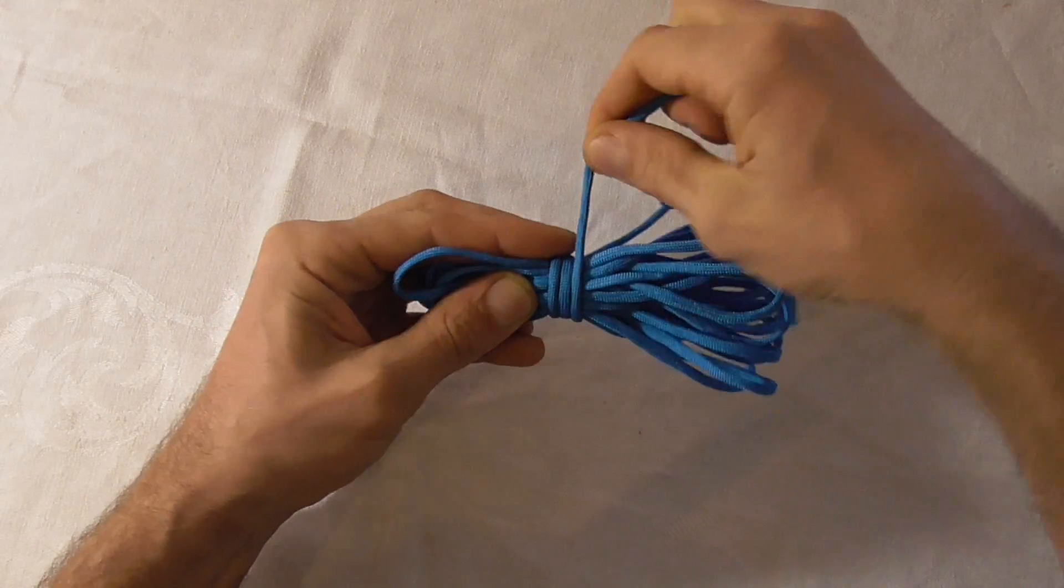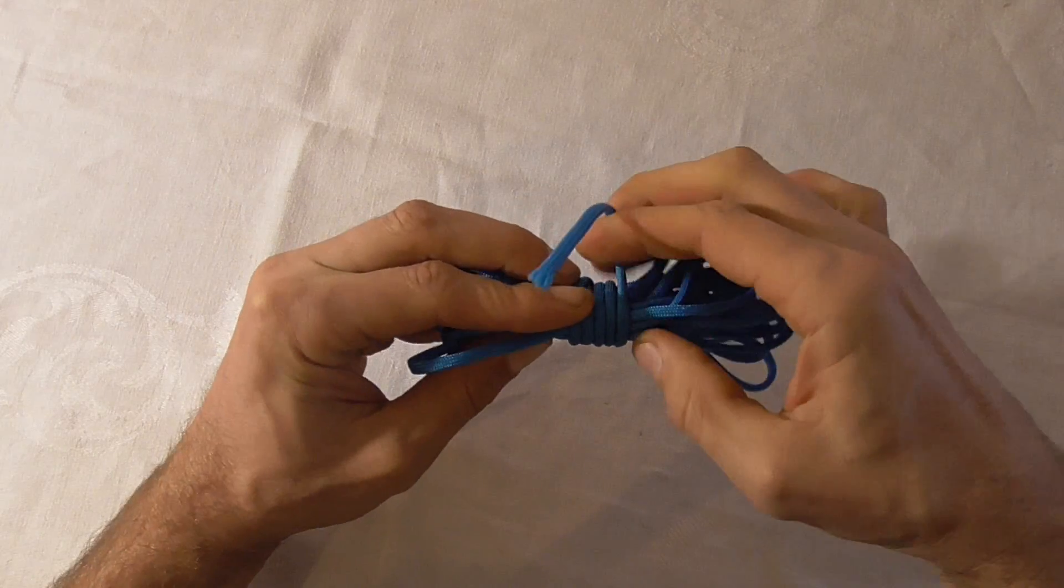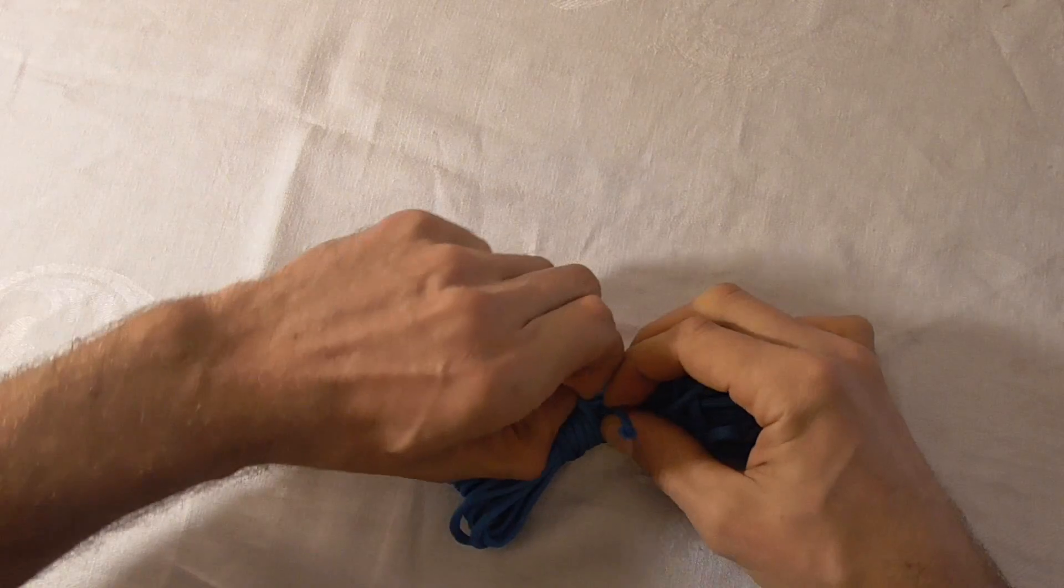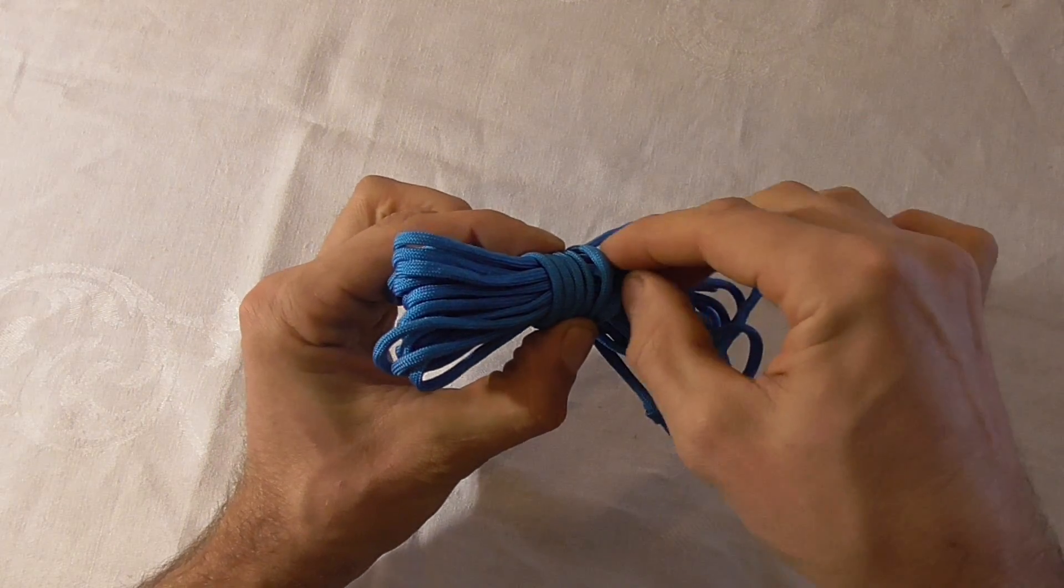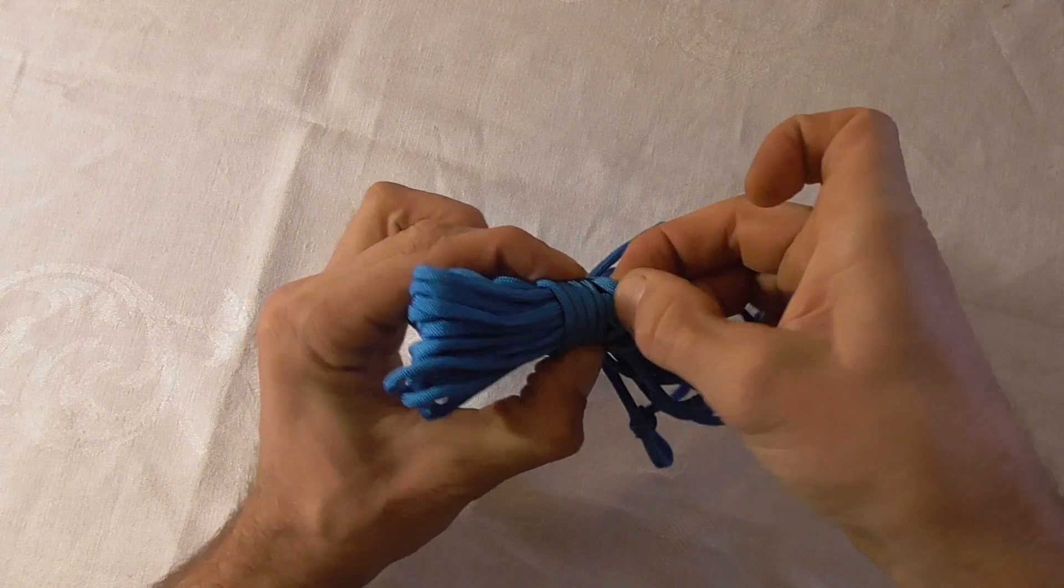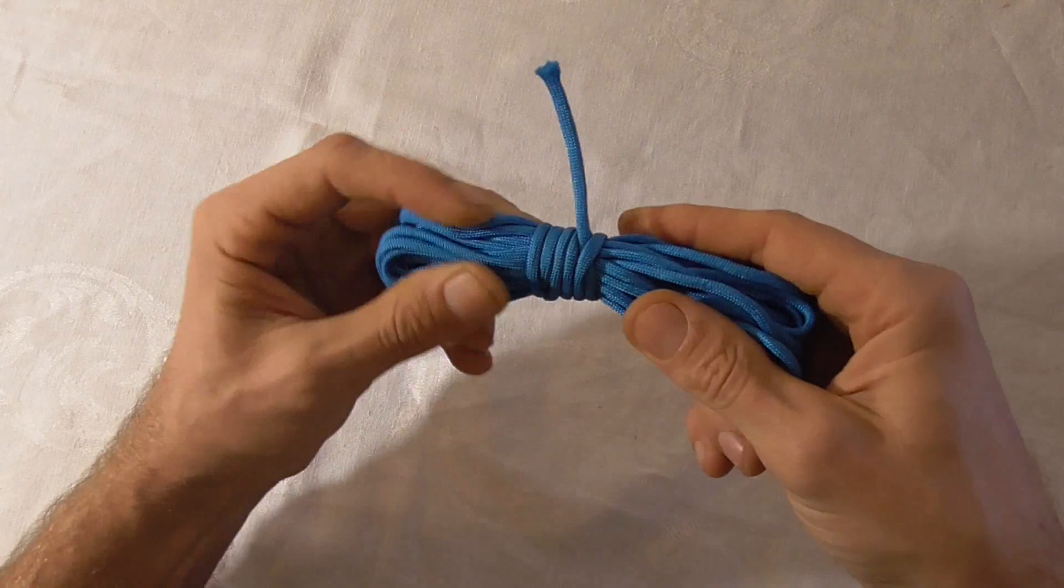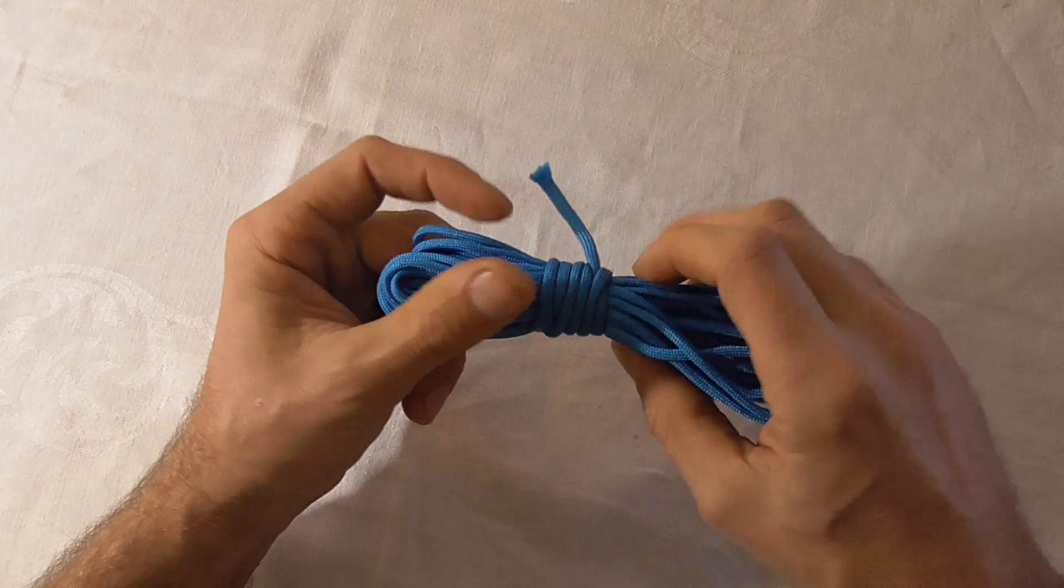So I just keep wrapping until I come to the end of my cord. And then I just want to lift the last wrap up a little bit to give myself a bit of a gap, put the end through that, and then pull it tight. And that's normally sufficient just to lock those wraps into place.